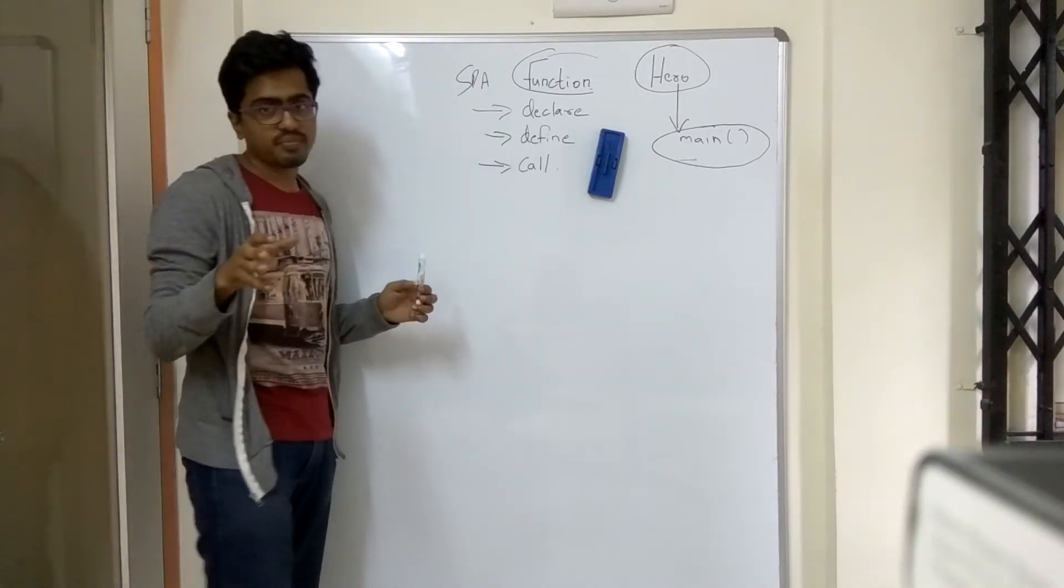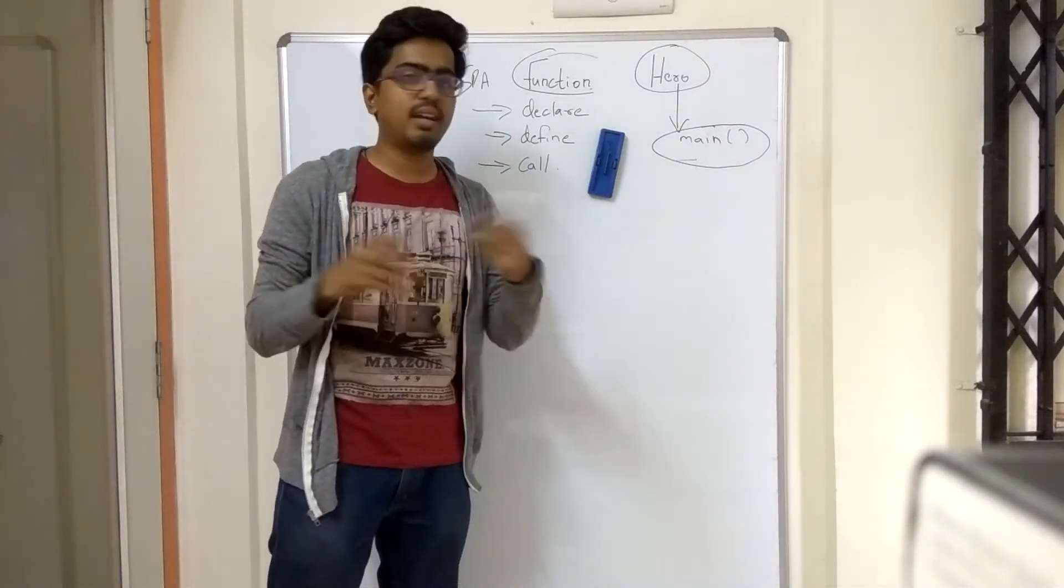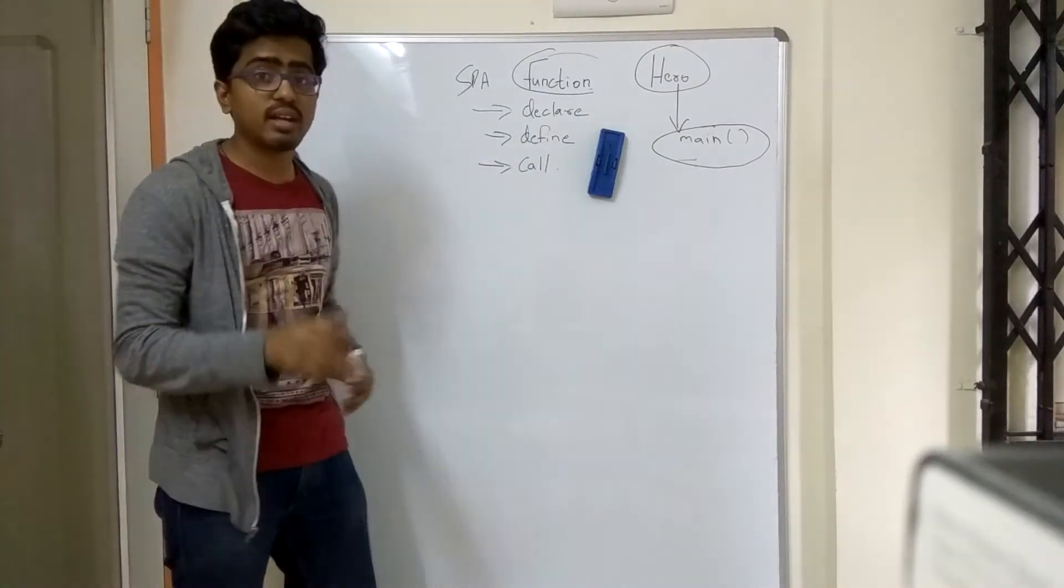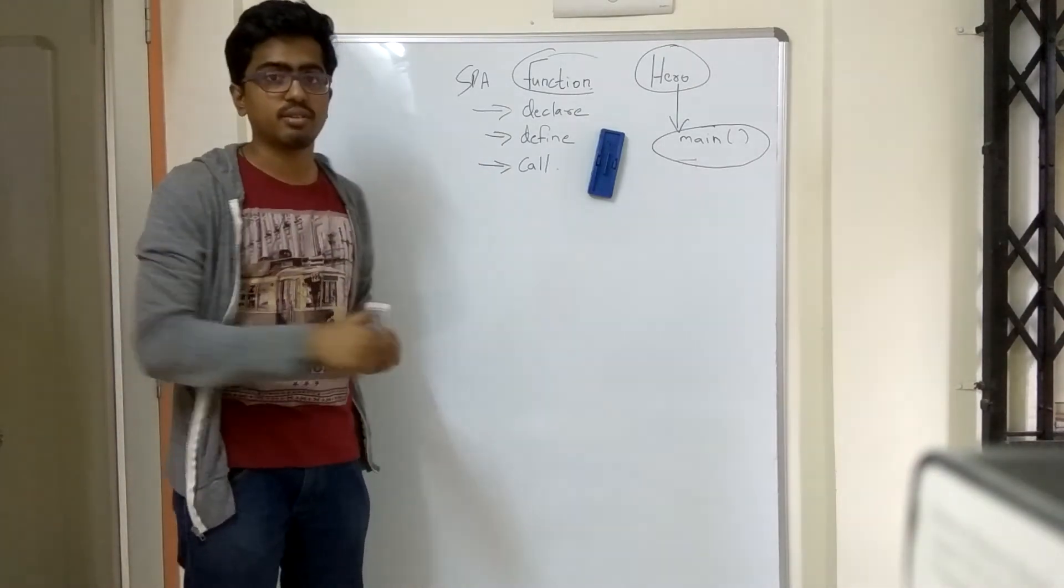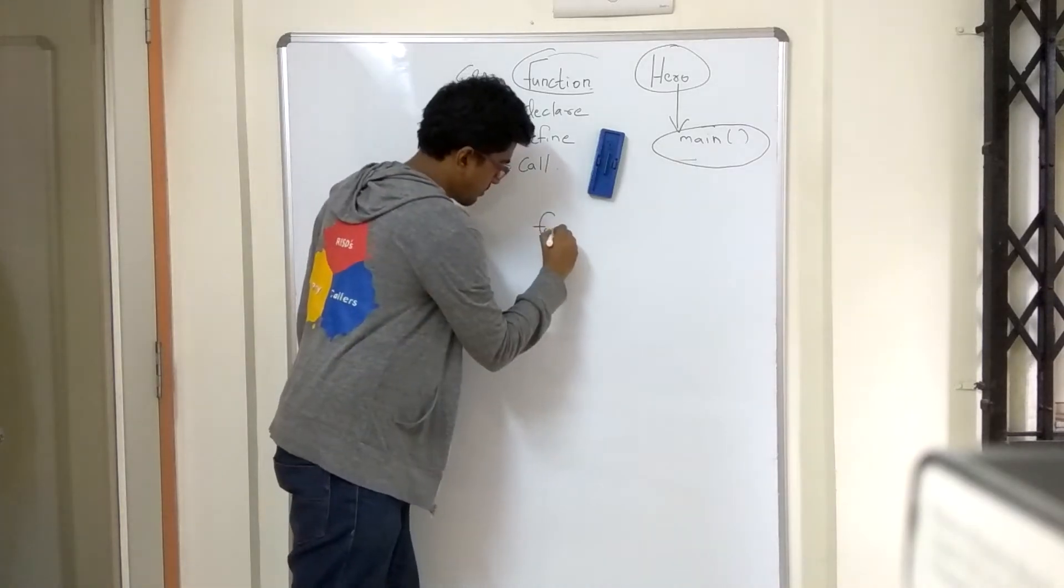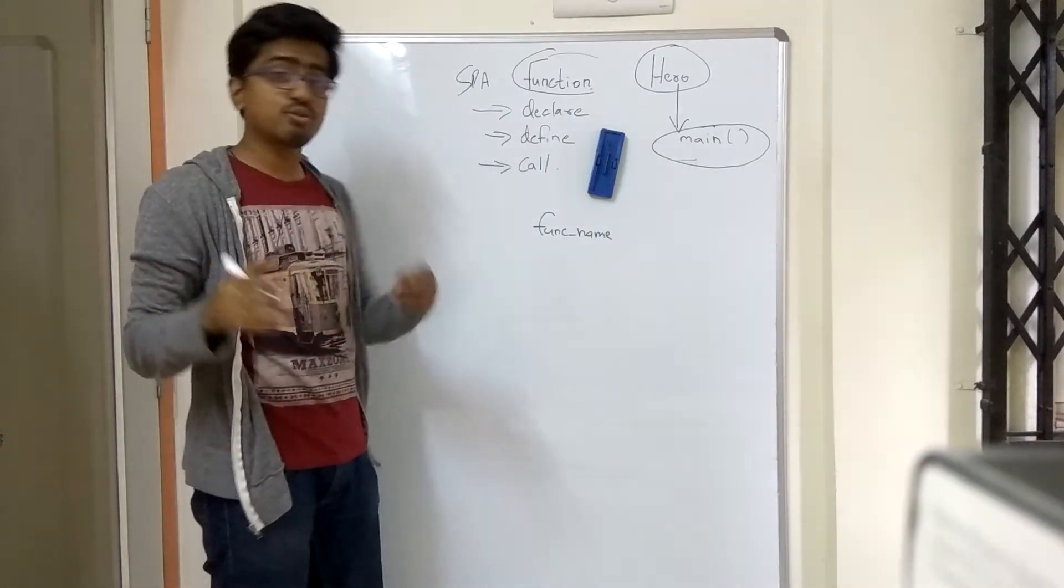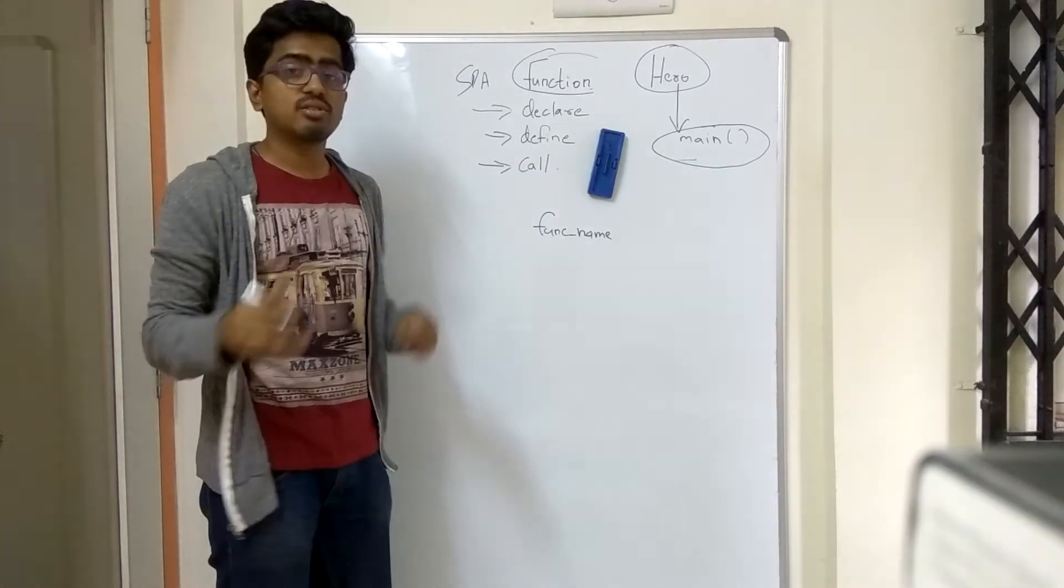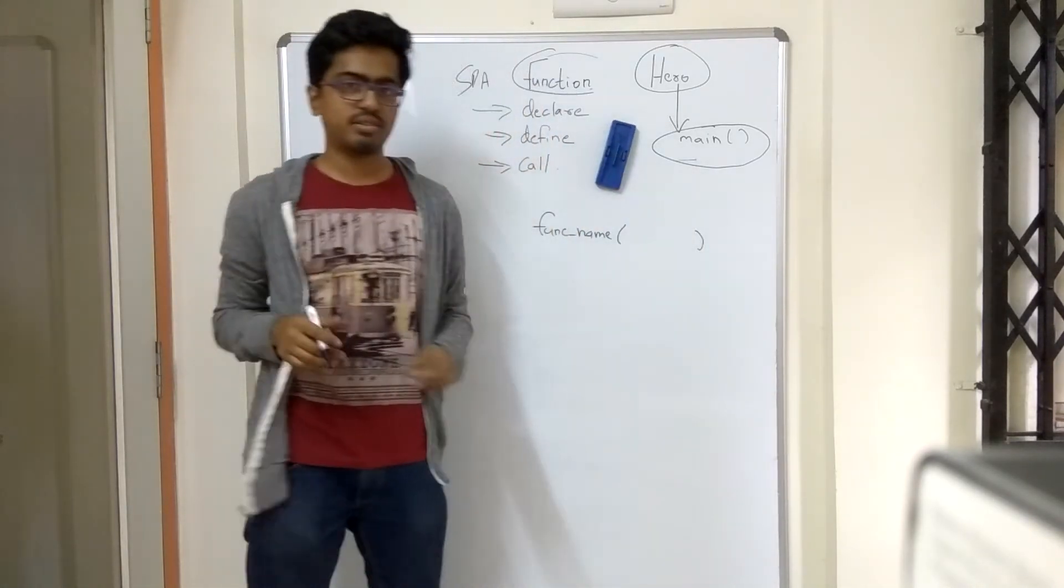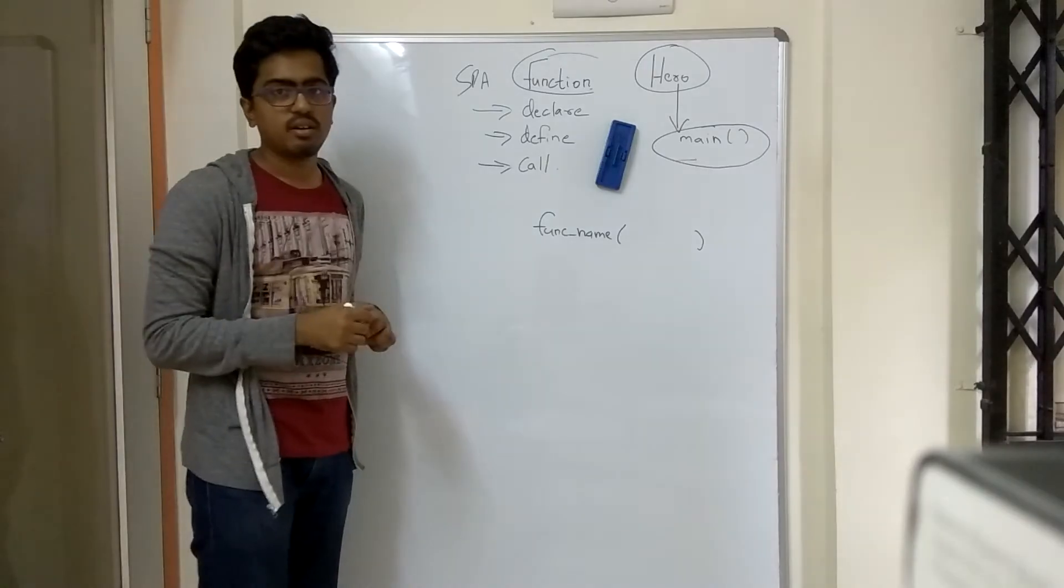Now, writing a function is important. You should know how to write a function because, agar wo thik se likha nahi, toh computer samjhega nahi. So there is a definite way of writing a function. The first thing is you have to write a name for the function. Function ka naam karan ho gaya. Abhi usko jo input de raho, it is called the parameters. The parameter list. You write it inside brackets. And whatever output you get, uska return type, you write to the left.